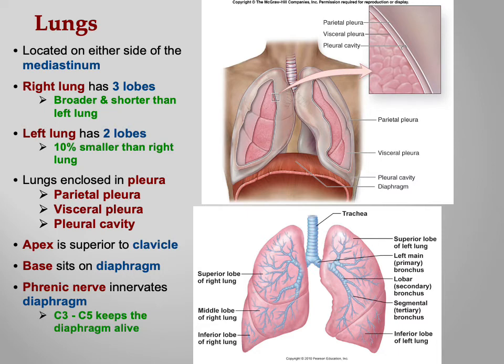The phrenic nerve exits between C3 and C5 — 'C3 to C5 keeps the diaphragm alive.' Any spinal injury at or above that level could prevent you from breathing, making it the critical cutoff.